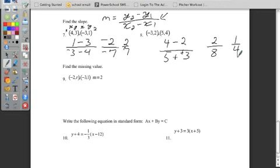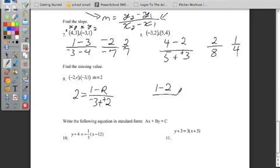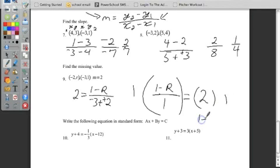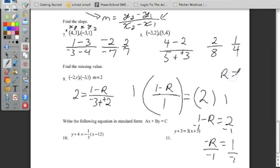Alright, number 9 is finding the missing value. Again, we're going to use the slope formula. We're going to say 2, which is our slope, equals (1 - r)/(-3 - (-2)). Again, a double negative makes that a positive. So (1 - r)/(-3 + 2) = (1 - r)/(-1) = 2. I'll multiply by -1 on each side. So 1 - r = -2. Now I will subtract 1 from each side. -r = -3. Divide by -1. So r = 3.